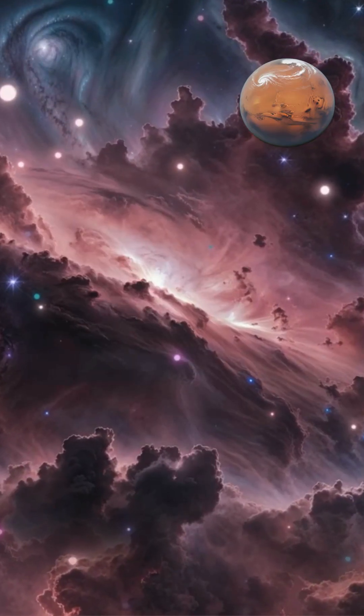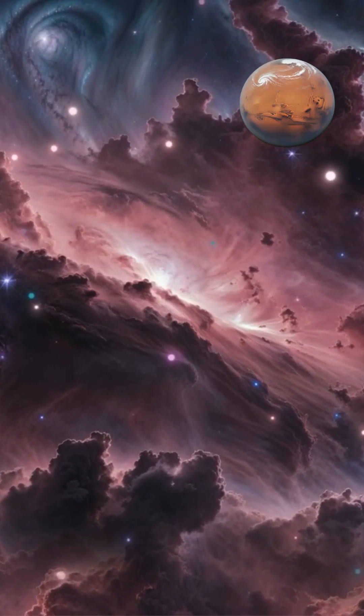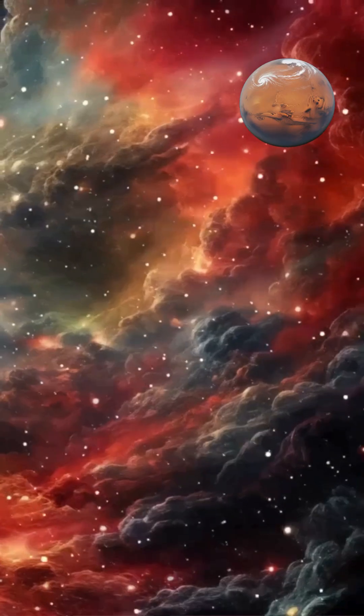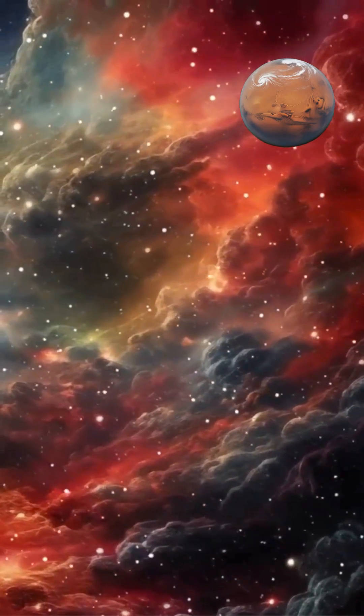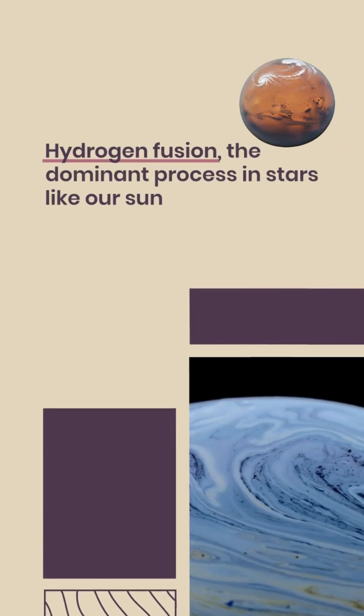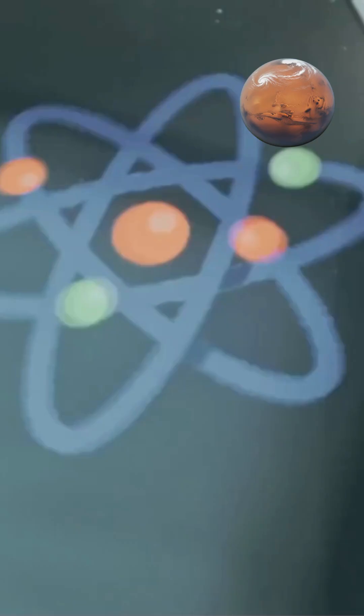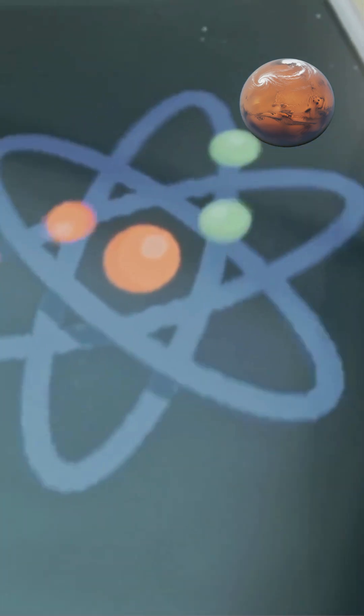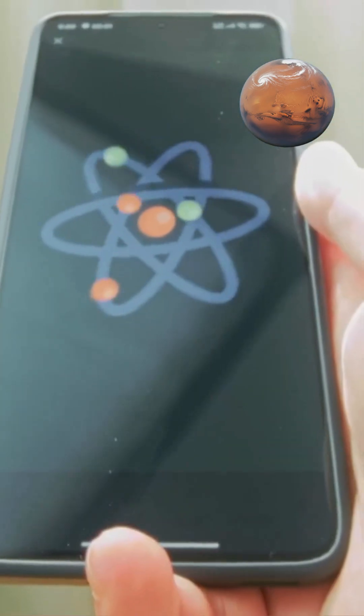This process gradually transforms a star's composition over billions of years and enriches the galaxy with elements essential for planet and life formation. Hydrogen fusion, the dominant process in stars like our Sun, converts hydrogen nuclei into helium through the proton-proton chain reaction.